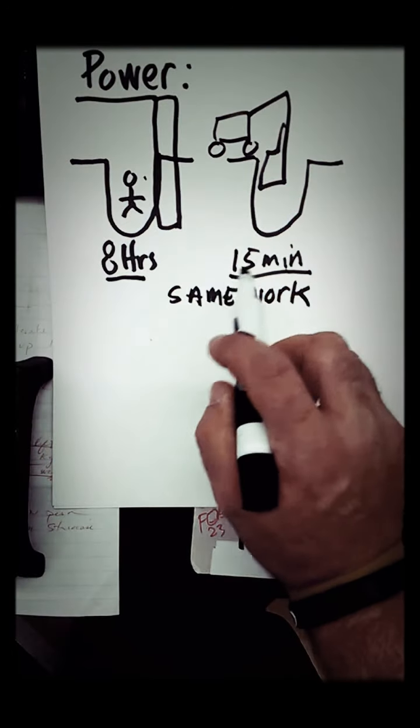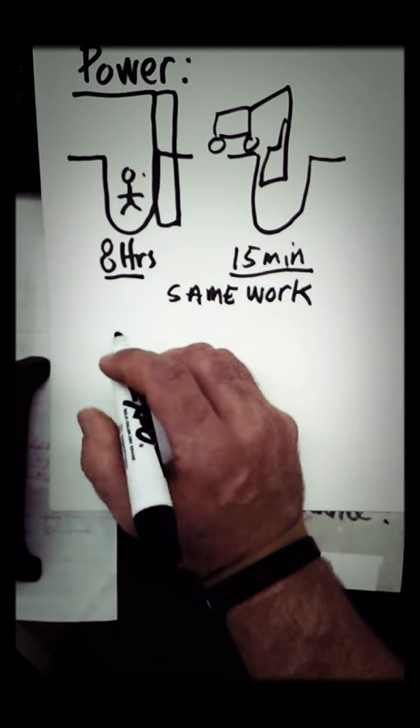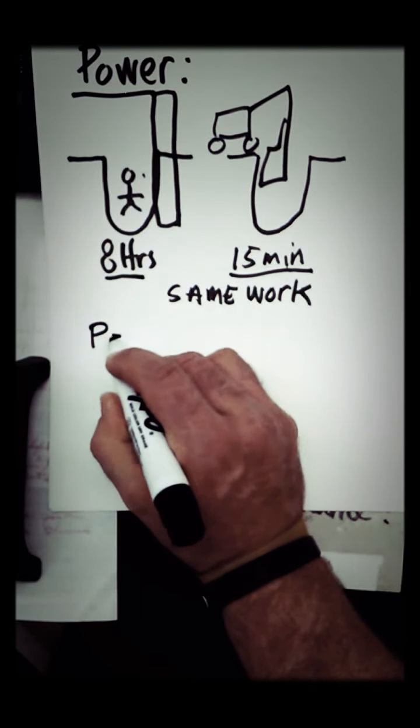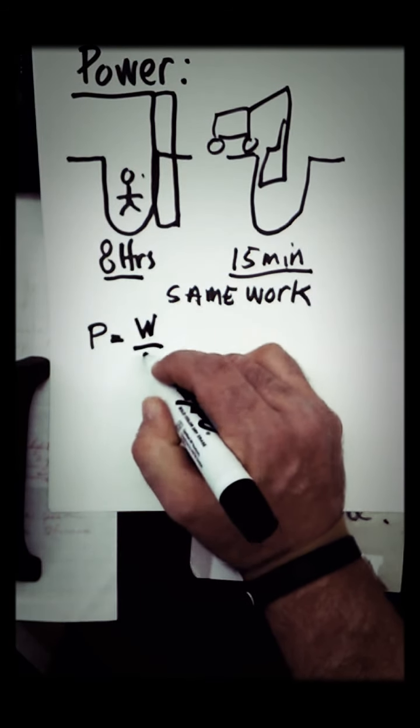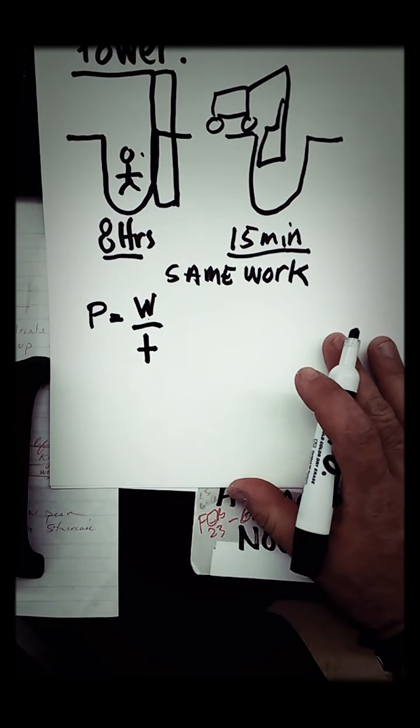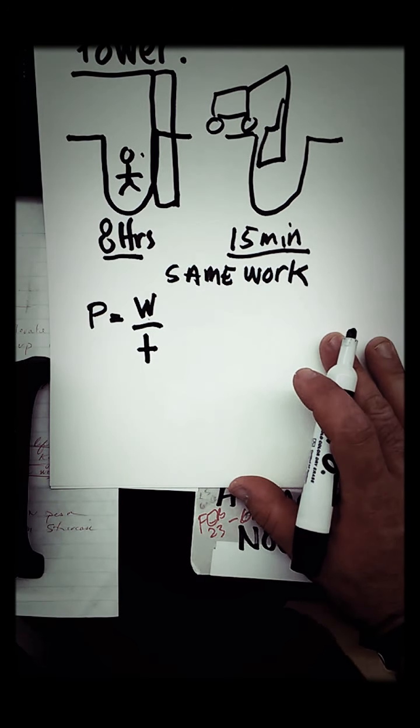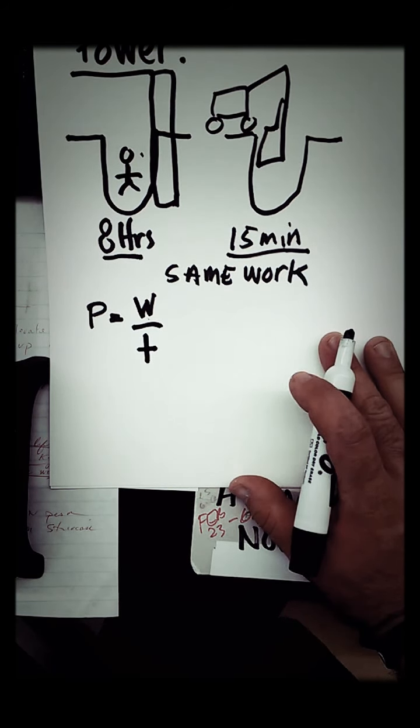Power is how fast you can do work. So power has something to do with work and time, and it actually works out where power is work divided by time. And when I think of something powerful, I think of a race car. It can go very fast in a short amount of time. I think of a power lifter that could lift some weights in a short amount of time. There's multiple other things that are powerful that you can think of, and time is a factor.